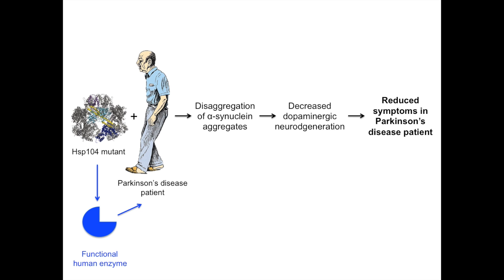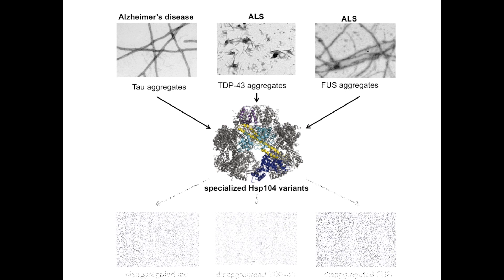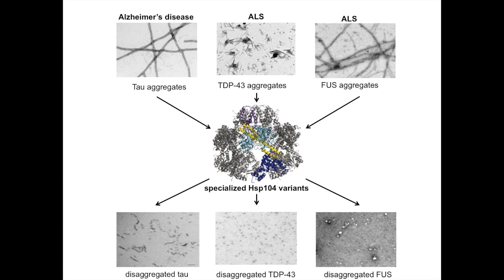Furthermore, future research prospects may involve engineering HSP-104 mutants to target many of the specific proteins known to be involved in neurodegenerative diseases, such as Tau, TDP-43, and FUS.